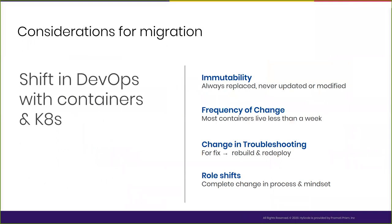With this shift in how things were deployed and delivered, there are some important considerations. With the immutability of containers, any small change — whether in the application or its dependencies — means you rebuild and redeploy; you never update anything in place. This also meant the frequency of deployments would go up, a lot of containers would live for a very short time, and there would be a change in how troubleshooting and debugging would happen. Fixes require rebuild and redeploy, and there's a role shift as well.